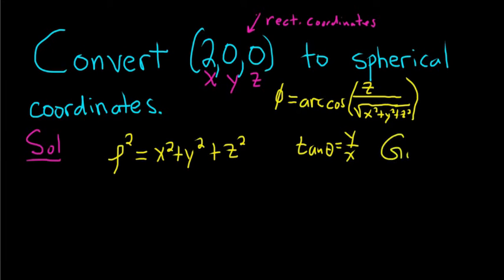The goal in this problem is to write the rectangular coordinates in spherical coordinates. We want to write that as rho, theta, phi. Our final answer should be rho, theta, phi. Let's go ahead and find rho first.